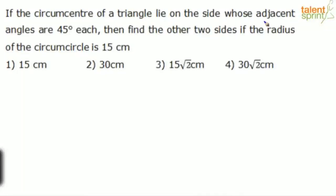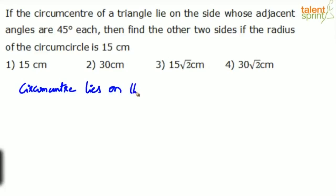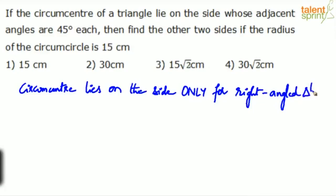If the circumcenter of a triangle lies on the side whose adjacent angles are 45 degrees each, find the other two sides if the radius of the circumcircle is 15 centimeters. Since the circumcenter lies on the side only for a right angle triangle, we can say it is a right angle triangle. The circumcenter lies on the hypotenuse.